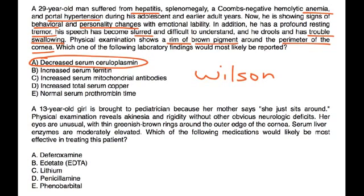A 13-year-old girl is brought to the pediatrician because her mother says she just sits around. Physical exam reveals akinesia and rigidity without other obvious neurologic deficits. Her eyes are unusual with thin greenish-brown rings around the outer edge of the cornea. Serum liver enzymes are moderately elevated. Which of the following medications would likely be most effective in treating this patient? Again, they describe those Kayser-Fleischer rings.